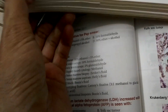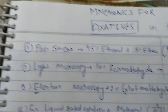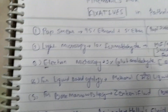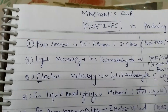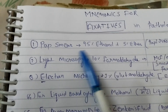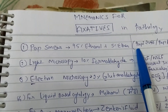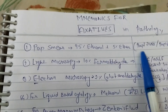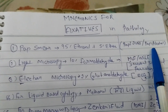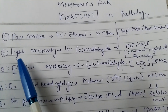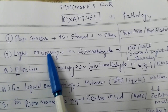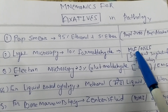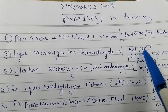Now moving to the mnemonic part. For pap smear, we can call it 'Papi' and ethanol is alcohol, so the mnemonic is 'Papi Shrab' — pap smear is papi, ethanol is alcohol. The second one is light microscopy with 10% formaldehyde — the mnemonic is MLF, standing for medial longitudinal fasciculus, where LM means light microscopy and F stands for formaldehyde.